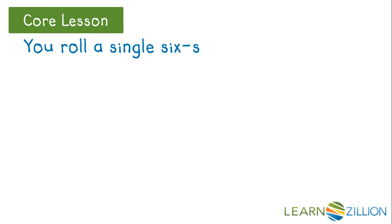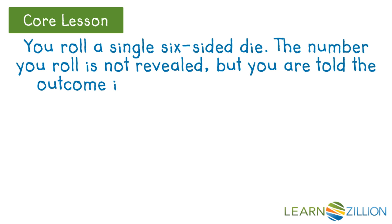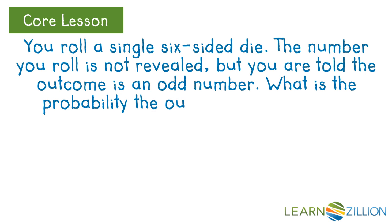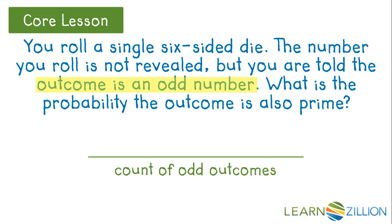Let's try another scenario. You roll a single six-sided die. The number you roll is not revealed, but you were told the outcome is an odd number. What is the probability the outcome is also prime? Again, this question is asking us for a fraction. The outcomes we are interested in are odd, so the count of odd outcomes becomes our denominator. We are also interested in how many of those odd outcomes are prime, so the count of outcomes satisfying the conditions of being both odd and prime becomes our numerator.